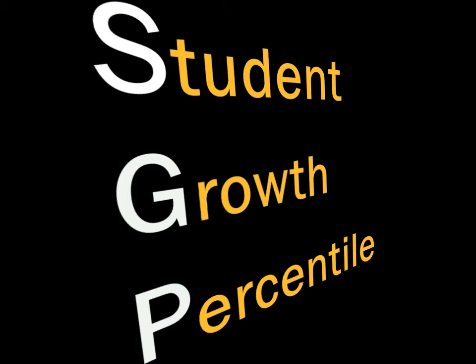The Massachusetts Department of Elementary and Secondary Education uses the Student Growth Percentile, the SGP, to describe students' performance on MCAS tests. This video will explain how the SGP is calculated for any group of students, for example, a district, a school, a grade, or a classroom.